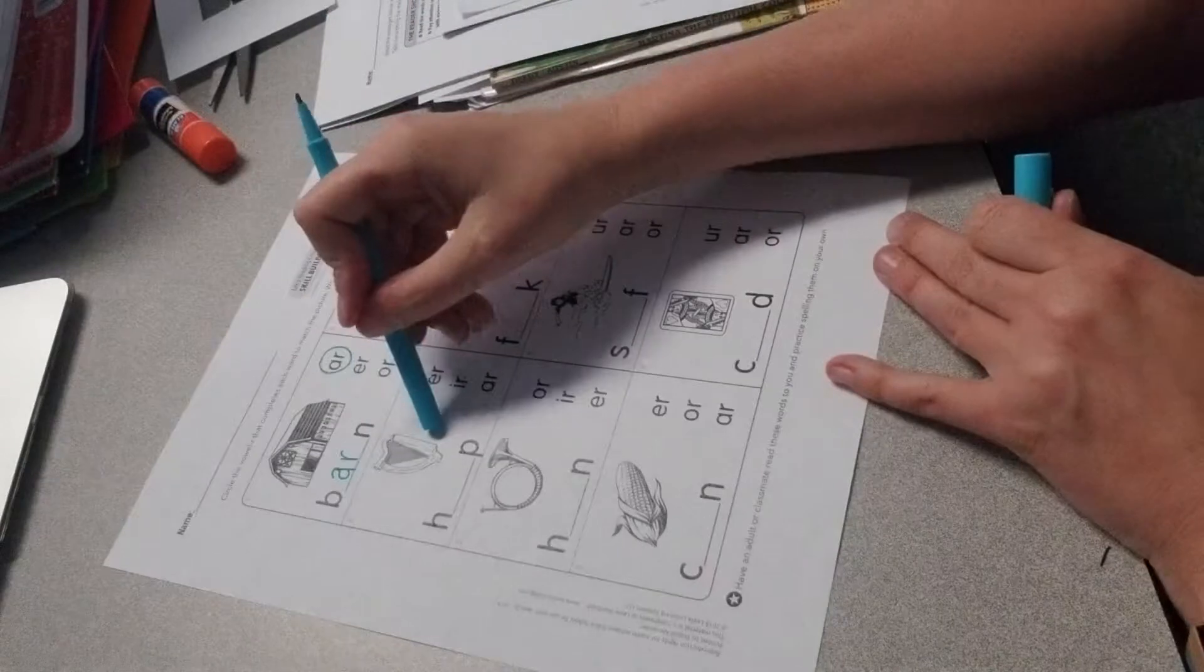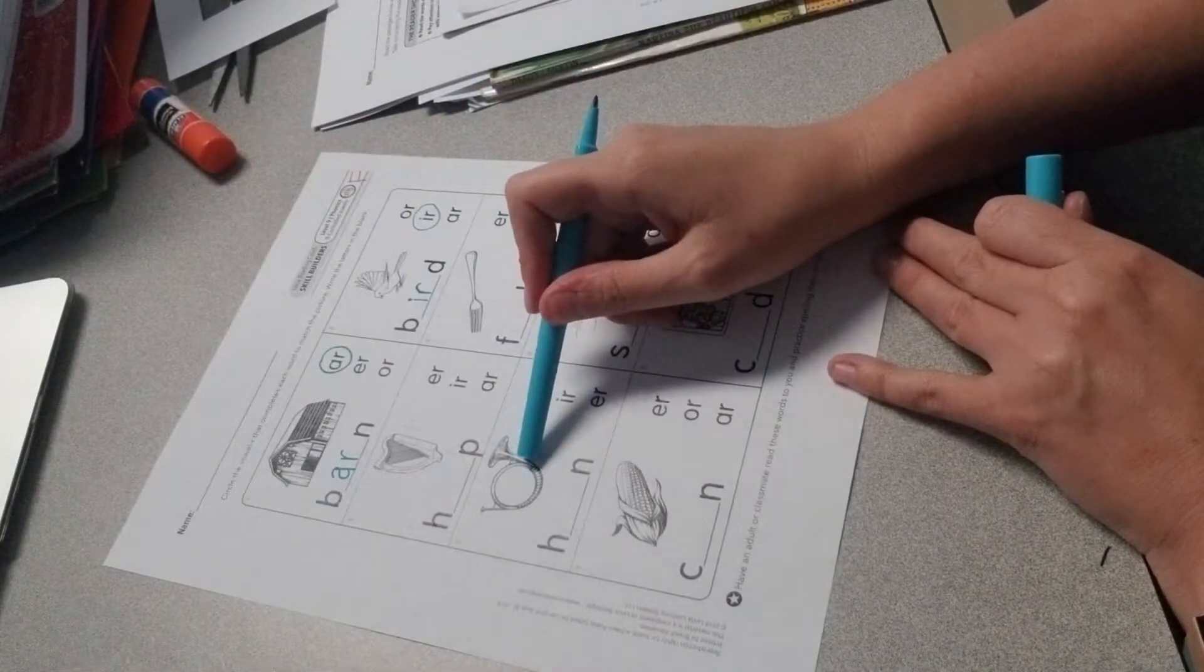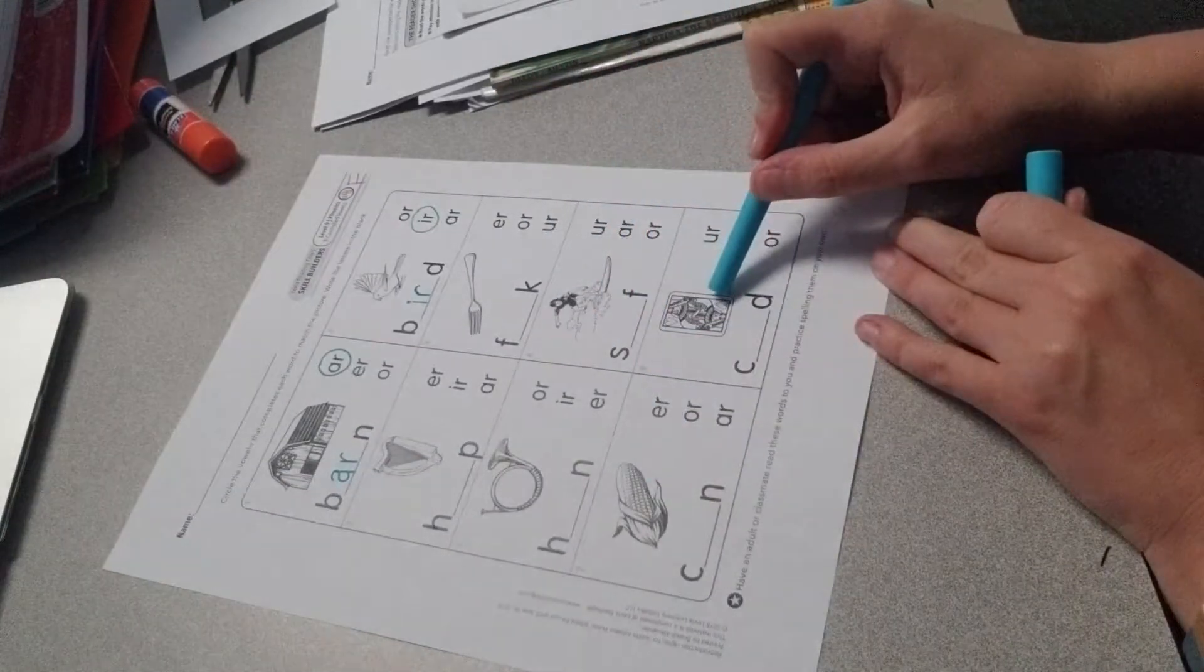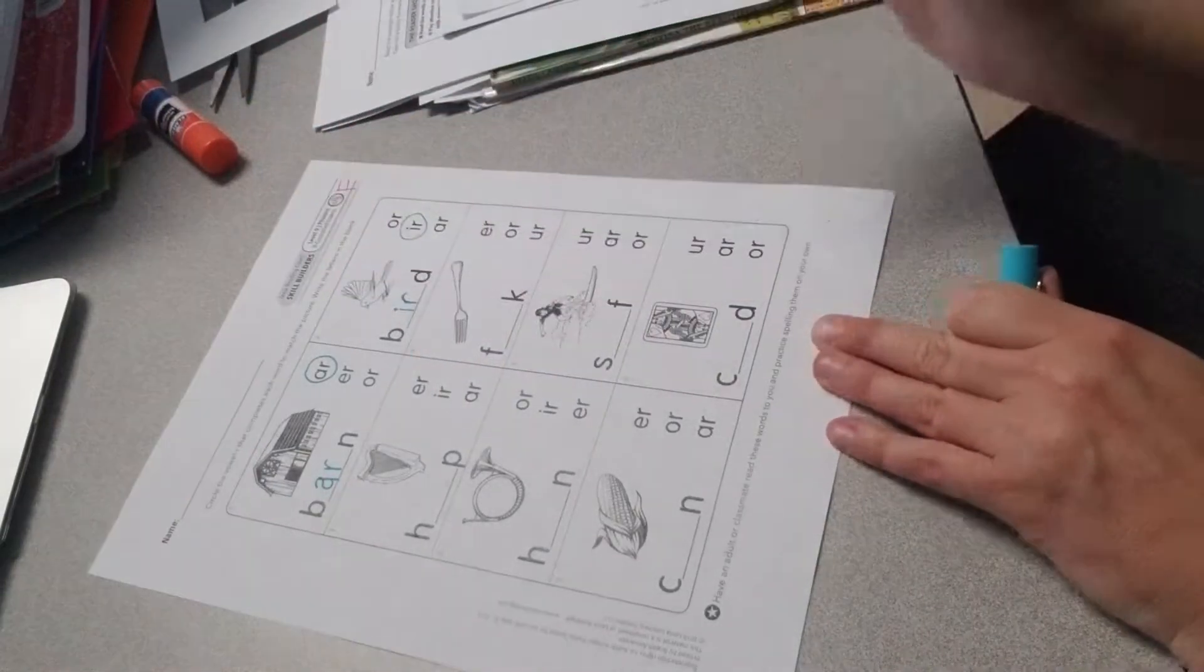Okay go ahead and finish this up. You have harp, you have fork, you have horn, you have surf, corn, and card. Go ahead and make sure you circle the correct vowel and then write the correct words in the blank.